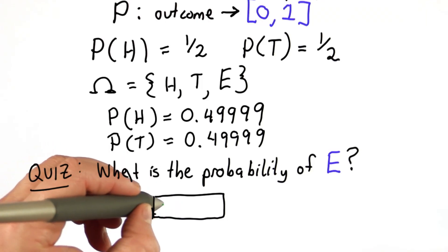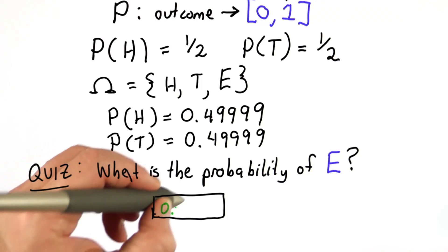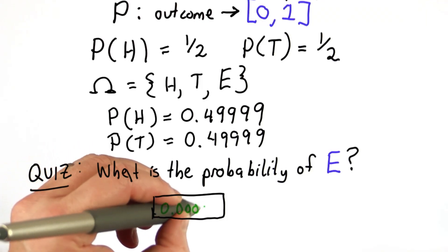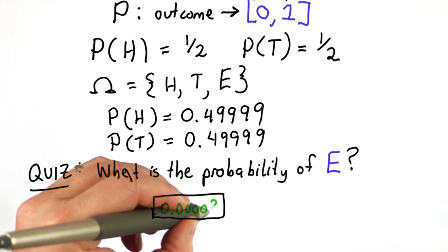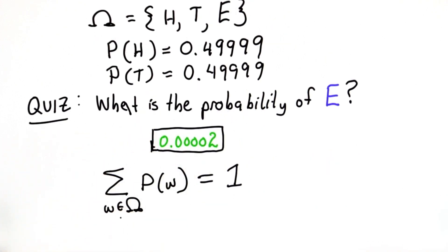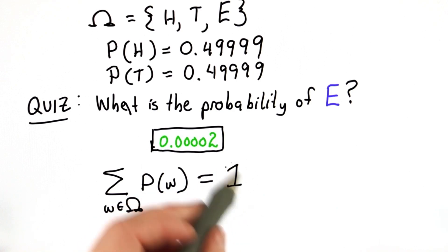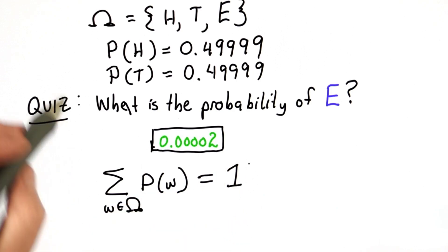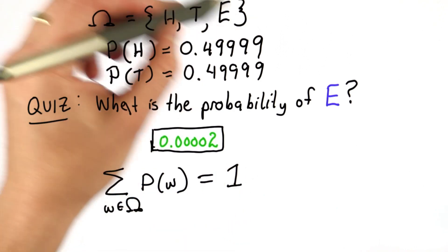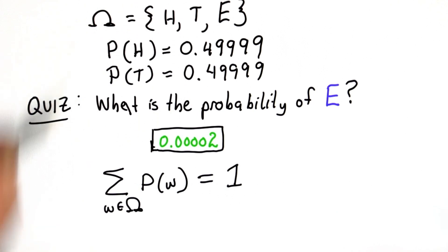The answer is 0.00002. And the reason for that is the sum of all the probabilities of all the events in the probability space must be 1. We're certain that we get one of these events every time we draw from the probability space.